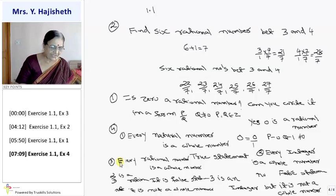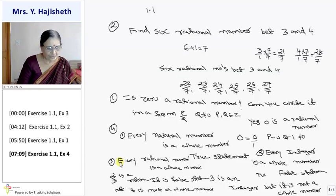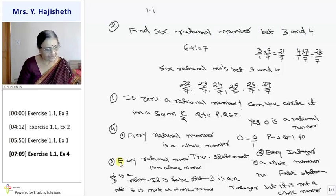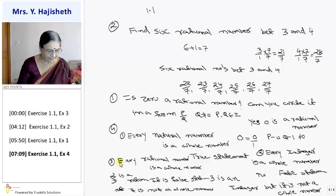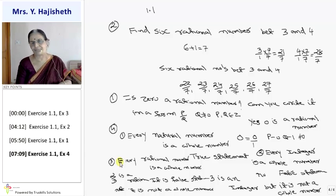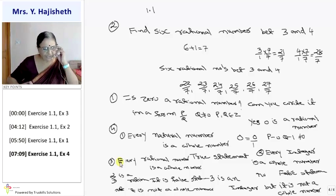Let me check the answers from the back. Exercise 1.1: first is true, second and third are false. And zero is a rational number — all answers are correct. That completes your exercise 1.1.